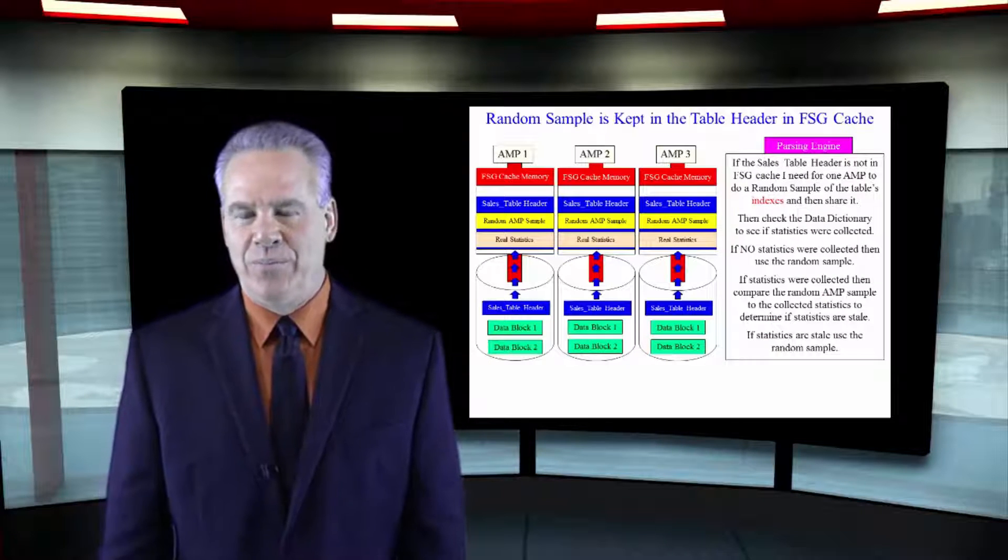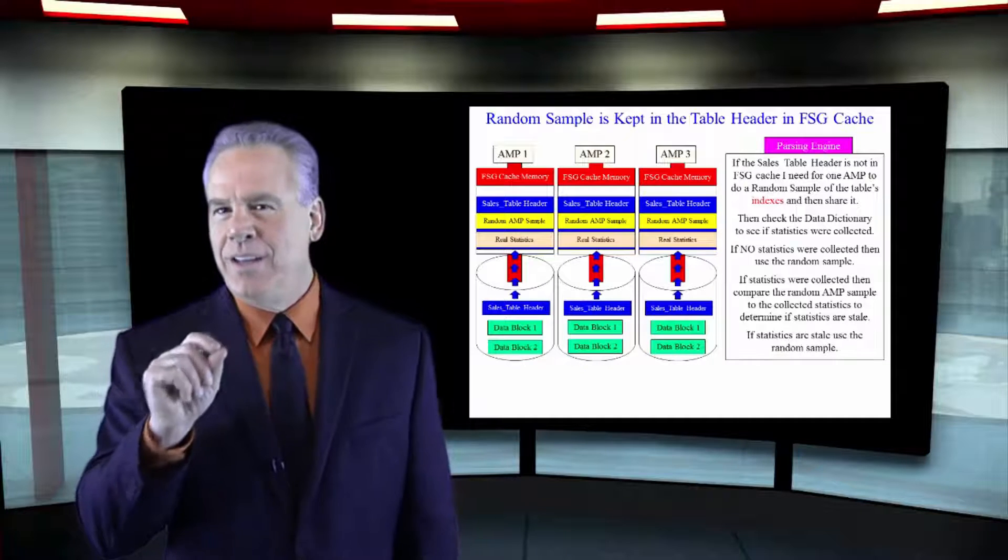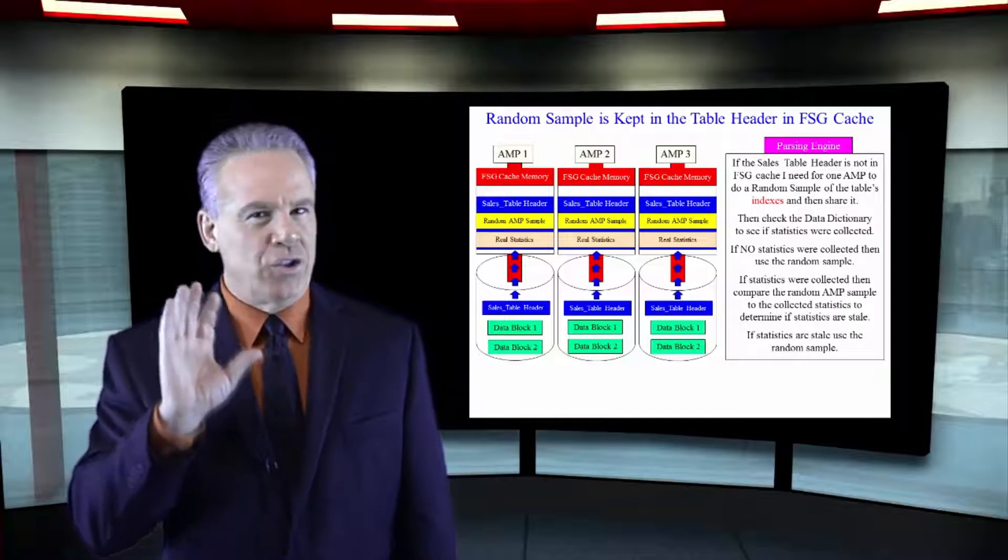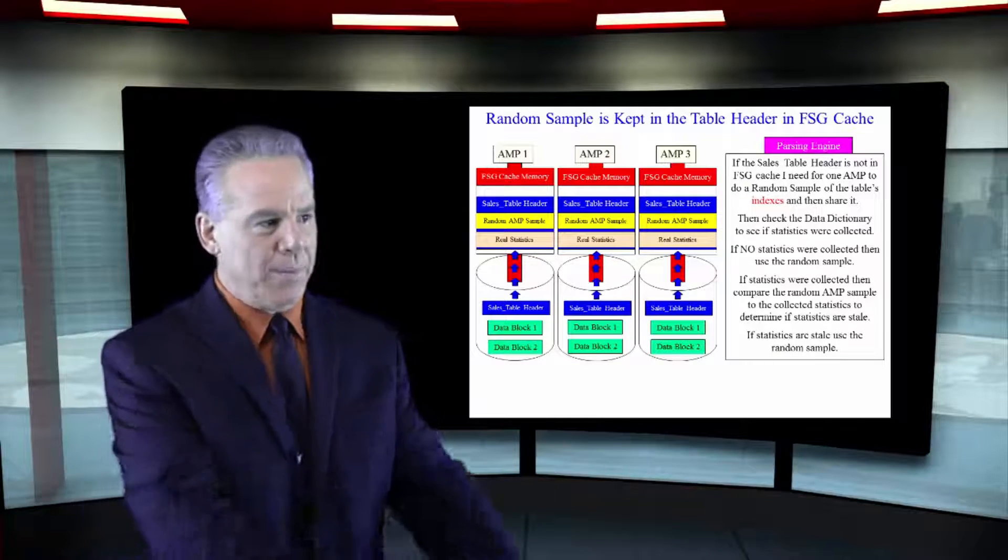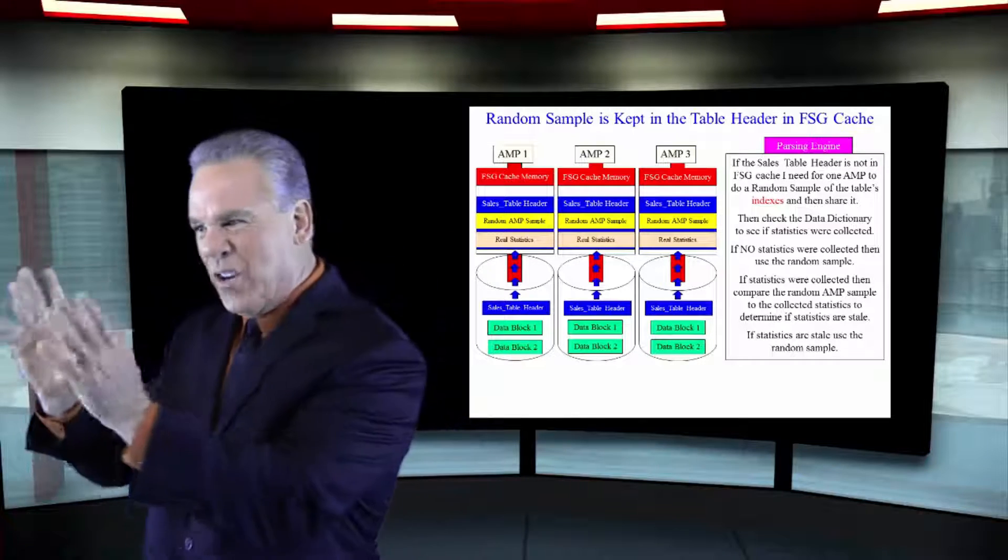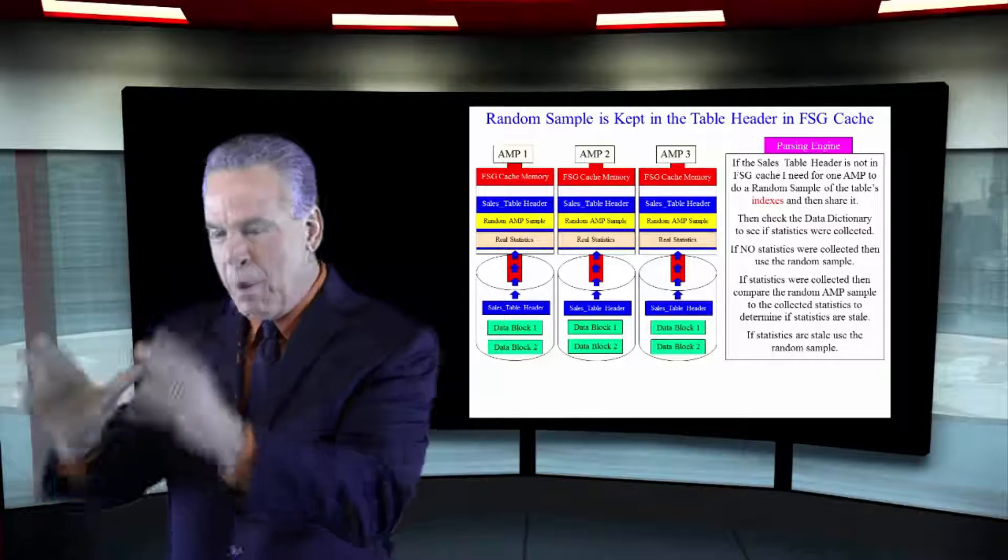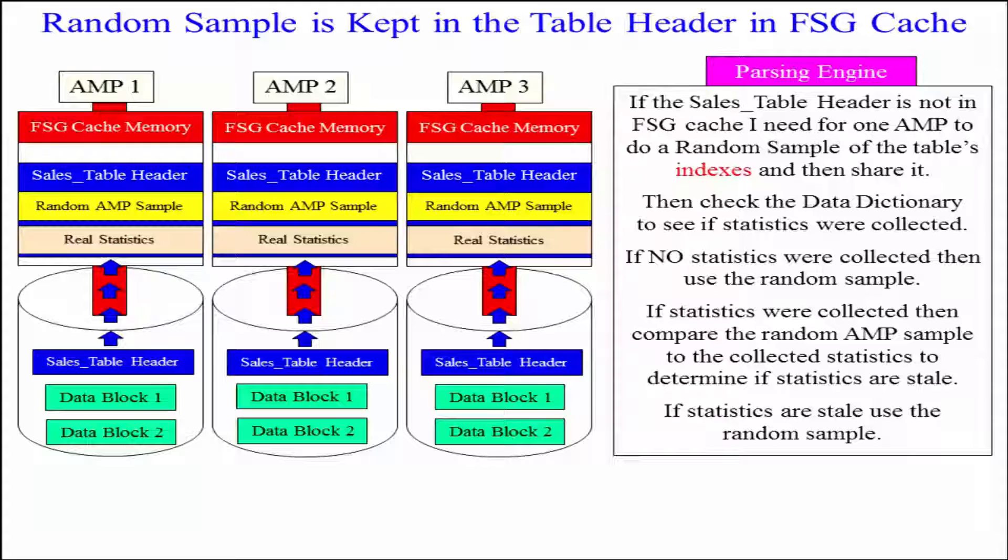Let's review. When you create a table on Teradata, as soon as you execute that create statement, a table header is created on every single AMP. Boom. So all AMPs have the exact same tables, same number of tables. It's like looking in a mirror. They just have different rows when the data is loaded.